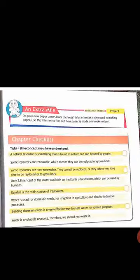Now the checklist points. A natural resource is something that is found in nature and can be used by people. Some resources are renewable, which means they can be replaced or grown back. Some resources are non-renewable, which means they cannot be replaced, or it takes many years to replenish them.